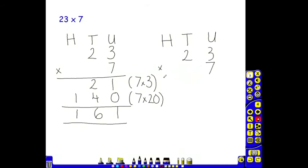Again, starting with the least significant digit. 7 multiplied by 3 is 21. I leave the 1 in the units and I carry the 2 tens to the tens column.